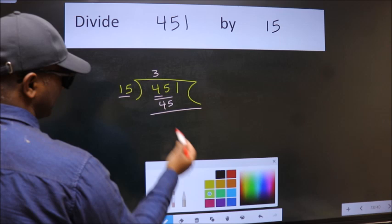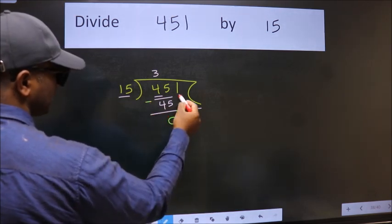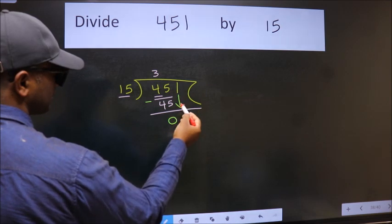Now we should subtract. We get 0. After this, bring down the beside number. So 1 down.